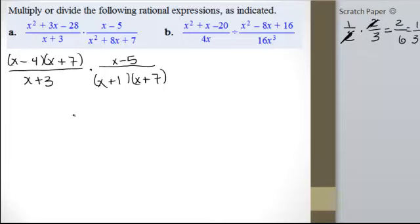So that's what we want to do here. We get it completely factored, and then we start reducing stuff. We can cross off these x plus 7's. Is there anything else that we'll reduce?